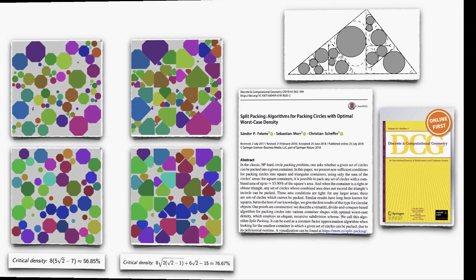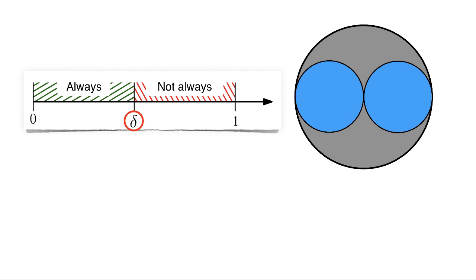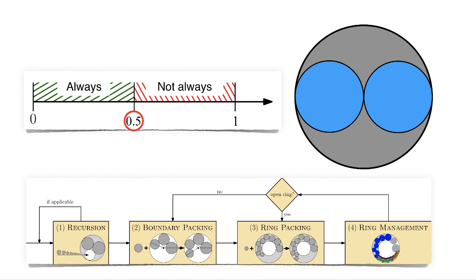What is the critical packing density of circles in a circle? This example shows that it cannot be larger than one half. We use a combination of four subroutines to show that any smaller set can always be packed.